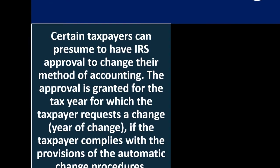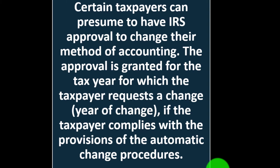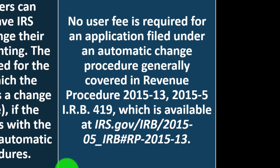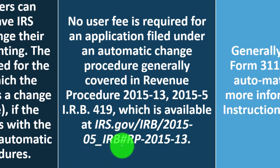Regarding the automatic change procedure: certain taxpayers can presume they have IRS approval to change their method of accounting. These would be more automatic types of changes where IRS approval can be assumed. The approval is granted for the tax year for which the taxpayer requested the change — the year of change — if the taxpayer complies with the provisions of the automatic change procedure. No user fee is required for an application filed under an automatic change procedure, generally covered in Revenue Procedure 2015-13, available at the IRS website.